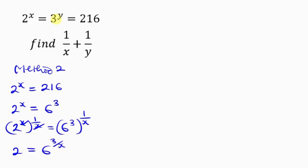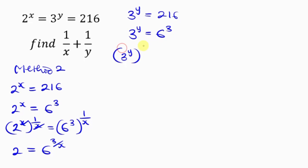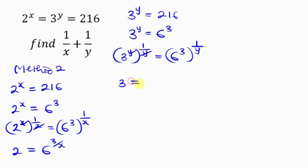Now let's do the same for 3 to the power of y equals 216, which is 6 to the power of 3. Multiplying both powers by 1 over y, the y cancels, leaving 3 equals 6 to the power of 3 over y. Remember, power multiplies power.